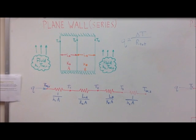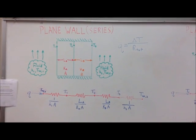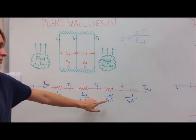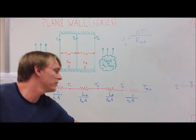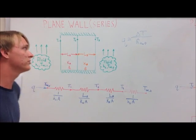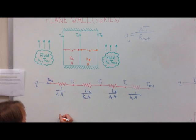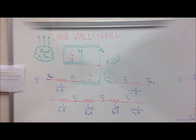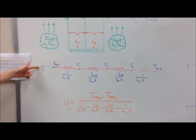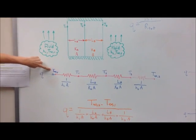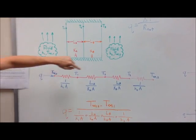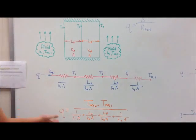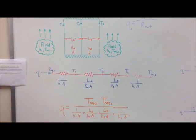We add up all four resistances — R1, R2, R3, and R4. Our total heat rate from fluid temperature one to fluid temperature two is calculated by summing all these resistances in the denominator, giving us the final answer.